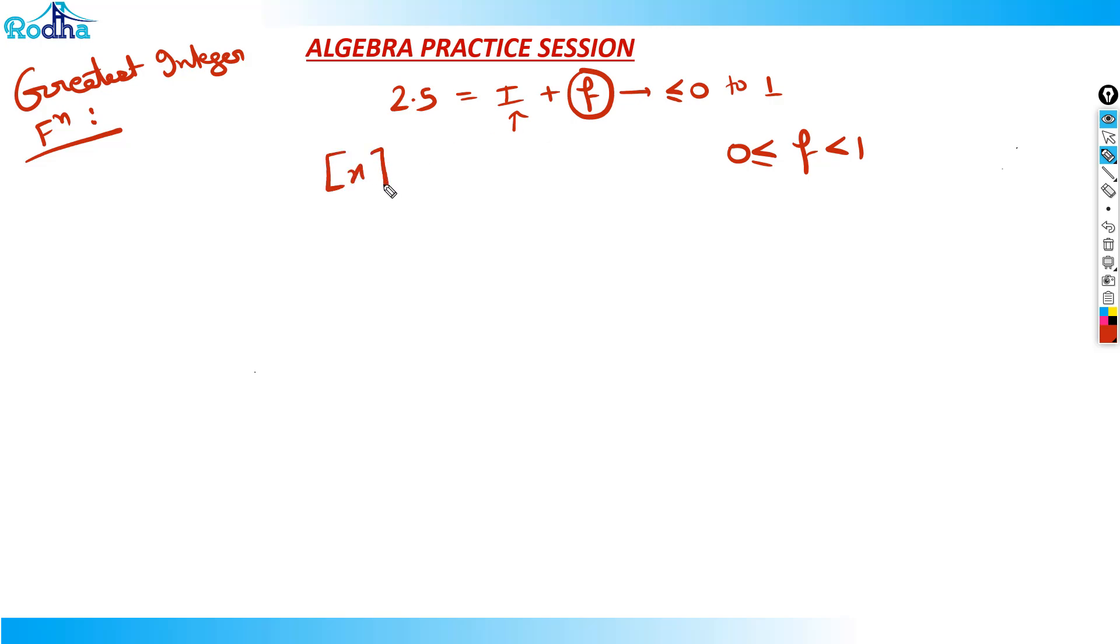So greatest integer function of any number x - if we have 2.5 as x, its greatest integer function will always be i. This is the meaning of greatest integer function. For example, if we have 3.9, I can write this as i plus f. What is i here? i is 3. And what is f here? f is 0.9, so 3 plus 0.9. That means greatest integer function of 3.9 should be equal to i, which means 3.